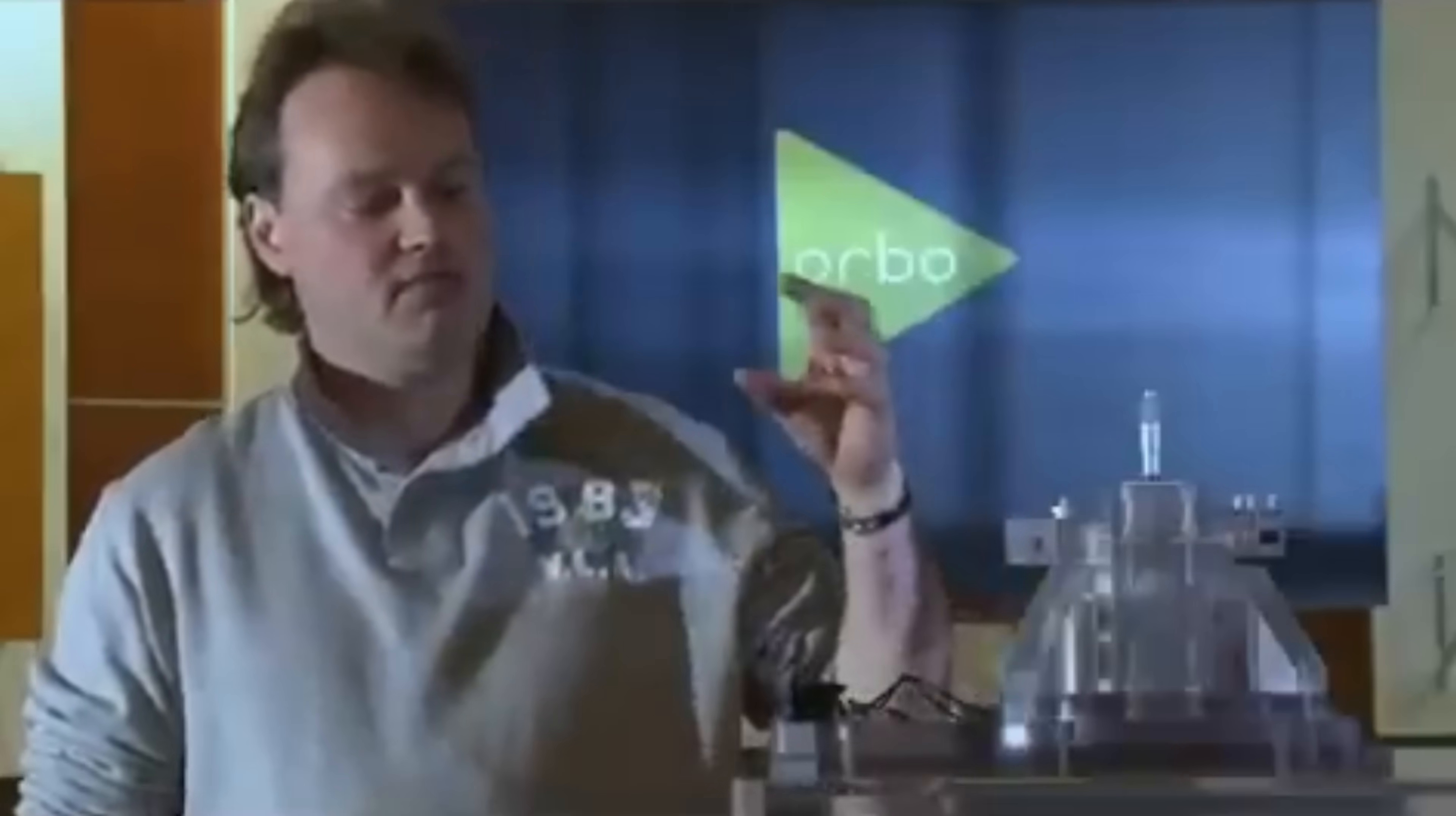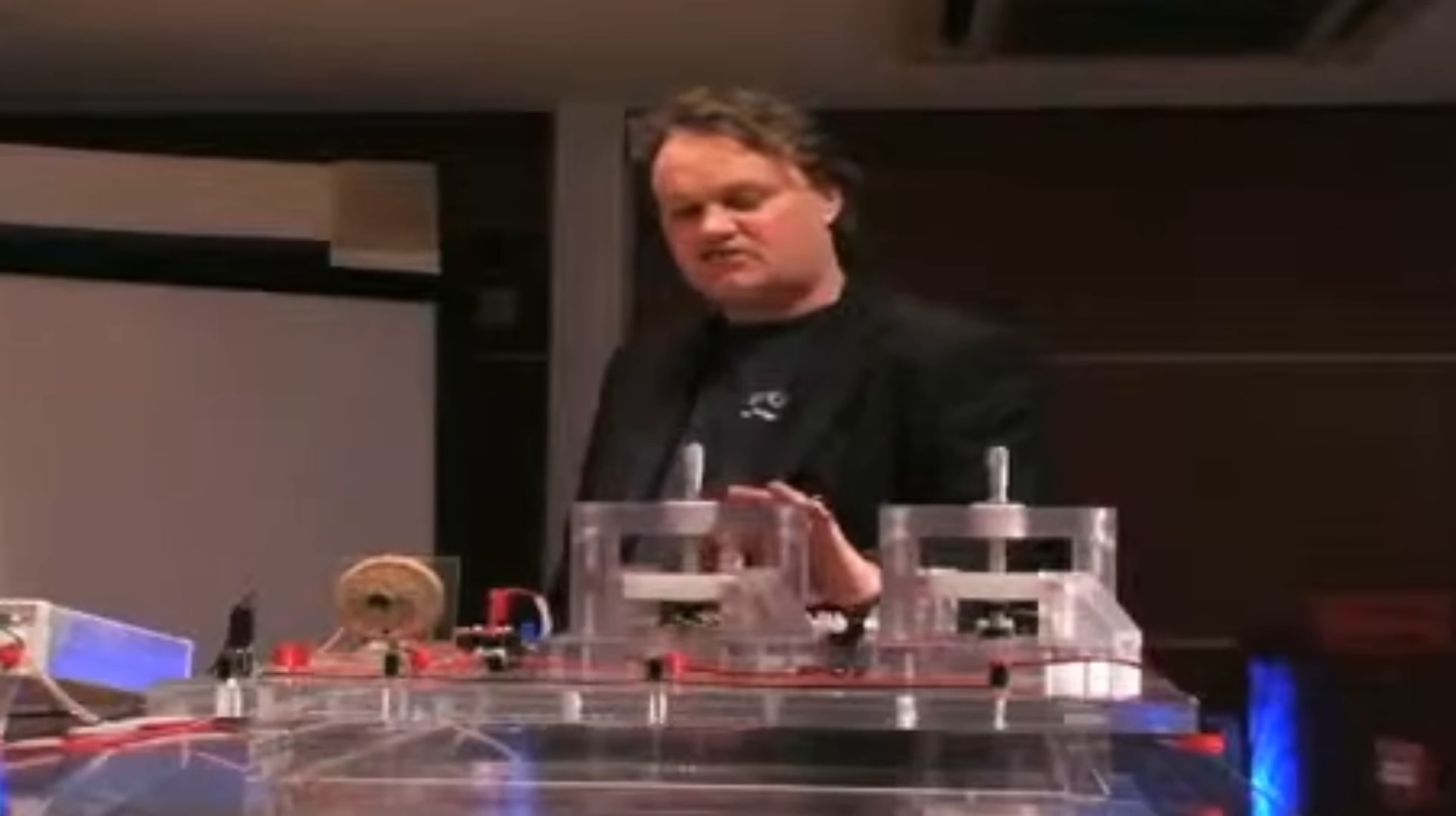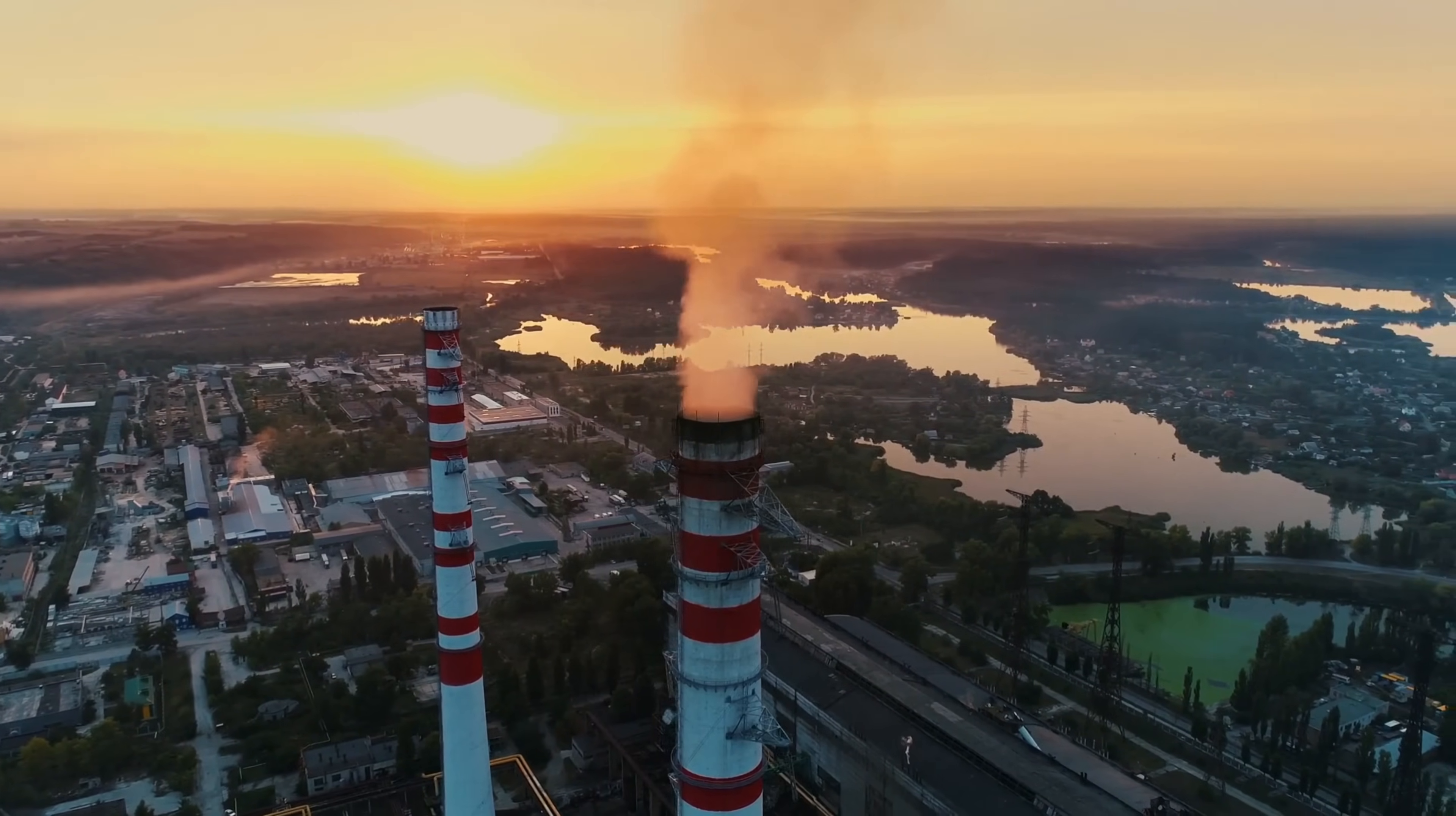The Orbo device consisted of a series of precisely arranged permanent magnets, carefully balanced and oriented to create a unique magnetic field. This magnetic field was able to interact with itself in a way that allowed the device to generate its own motive force, continuously spinning and producing an endless supply of clean, renewable energy. Stearn reported that the Orbo prototype was able to generate up to 200 watts of continuous power, a remarkable feat considering the device required no external energy source to operate.